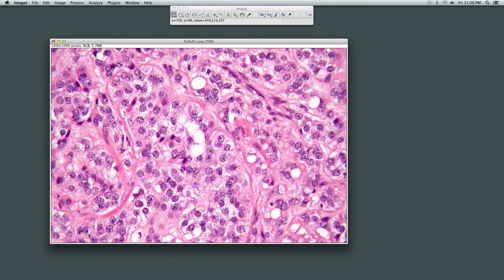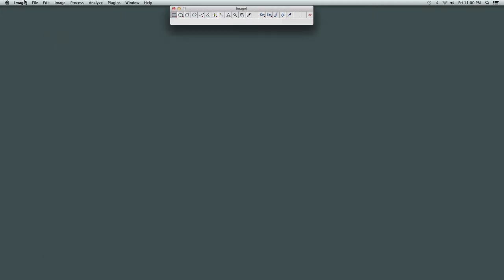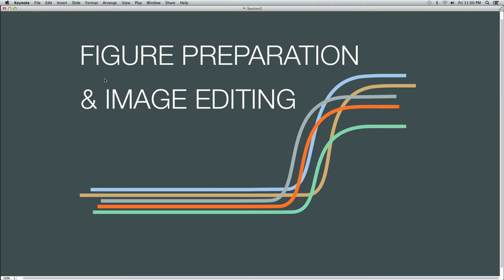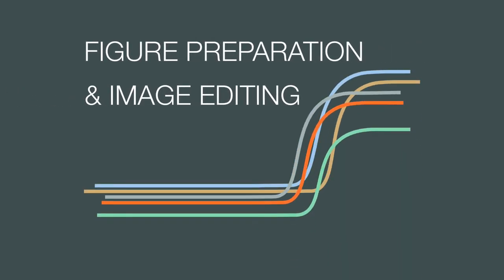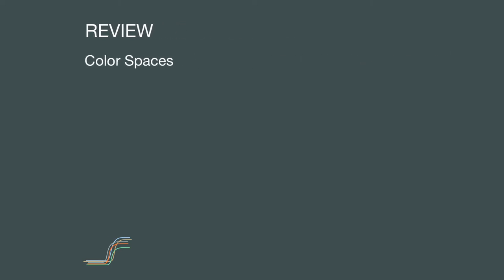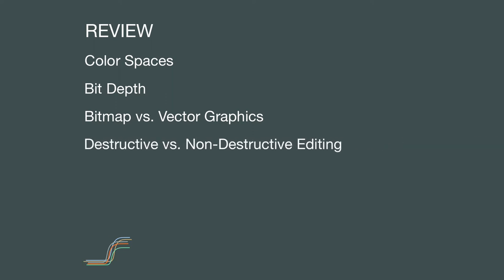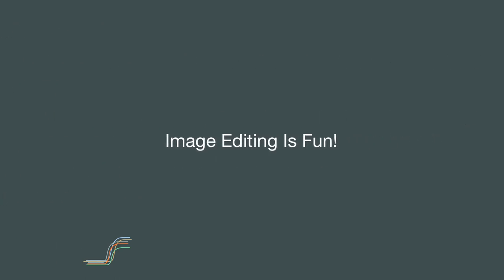We're finished with ImageJ for now, so close all the windows and quit ImageJ. This has been the Figure Preparation and Image Editing Workshop. Over the three sessions, we've covered color spaces, bit depth, bitmap and vector graphics formats, destructive vs. non-destructive editing, and software tools and concepts. Image editing is fun. The best way to gain familiarity and expertise with these concepts and tools is to use them frequently and when not up against a deadline. I recommend making a copy of your digital camera roll from your last vacation and experimenting.